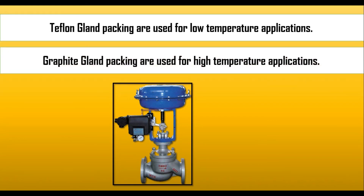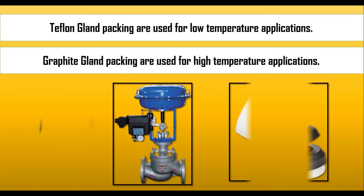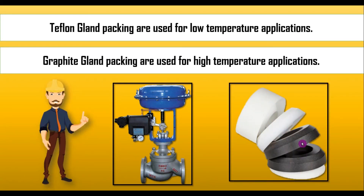Graphite gland packing is used for high temperature applications. So the difference is: Teflon gland packing is used for low temperature applications and graphite gland packing is used for high temperature applications. In the picture, the white ones are Teflon gland packing and the black ones are graphite gland packing.